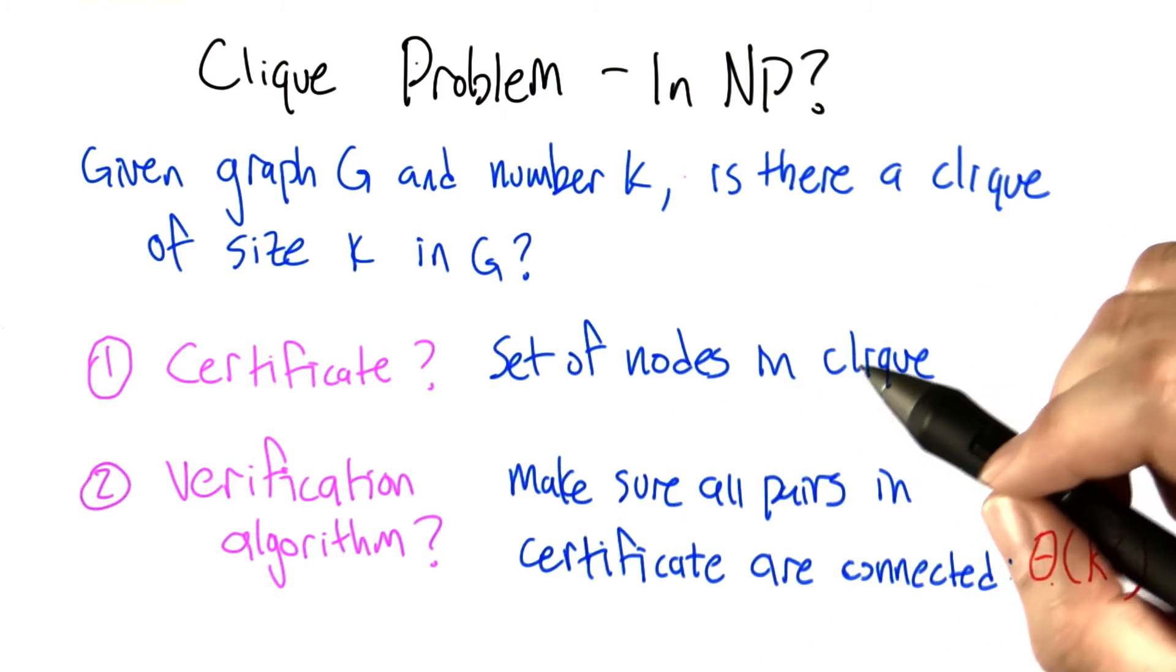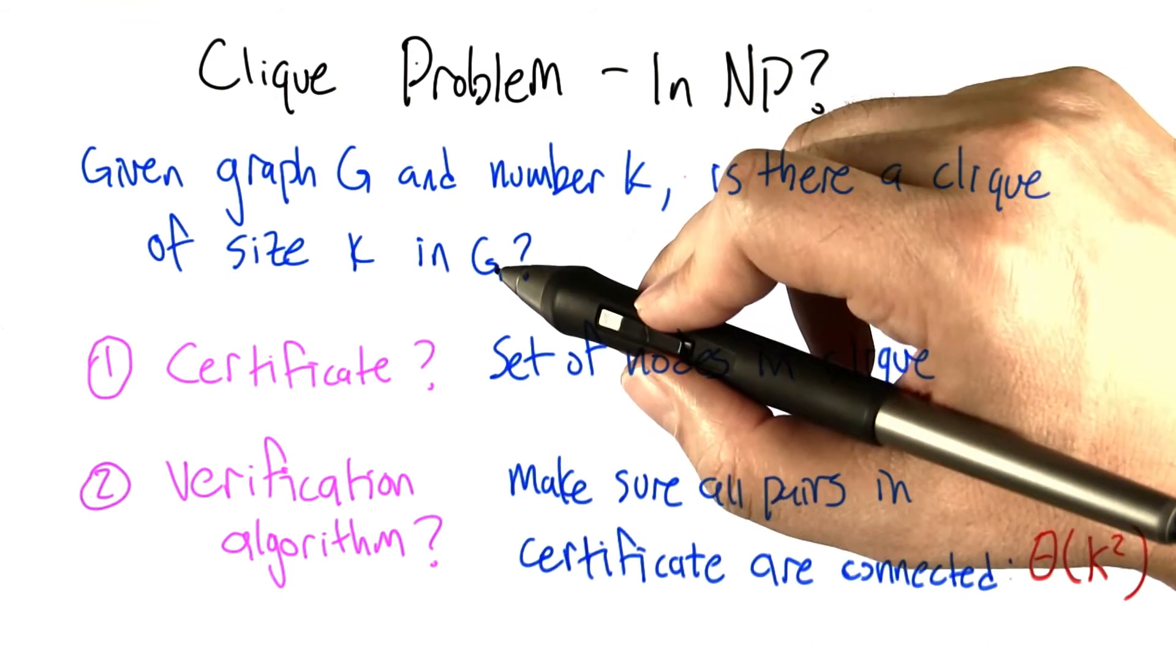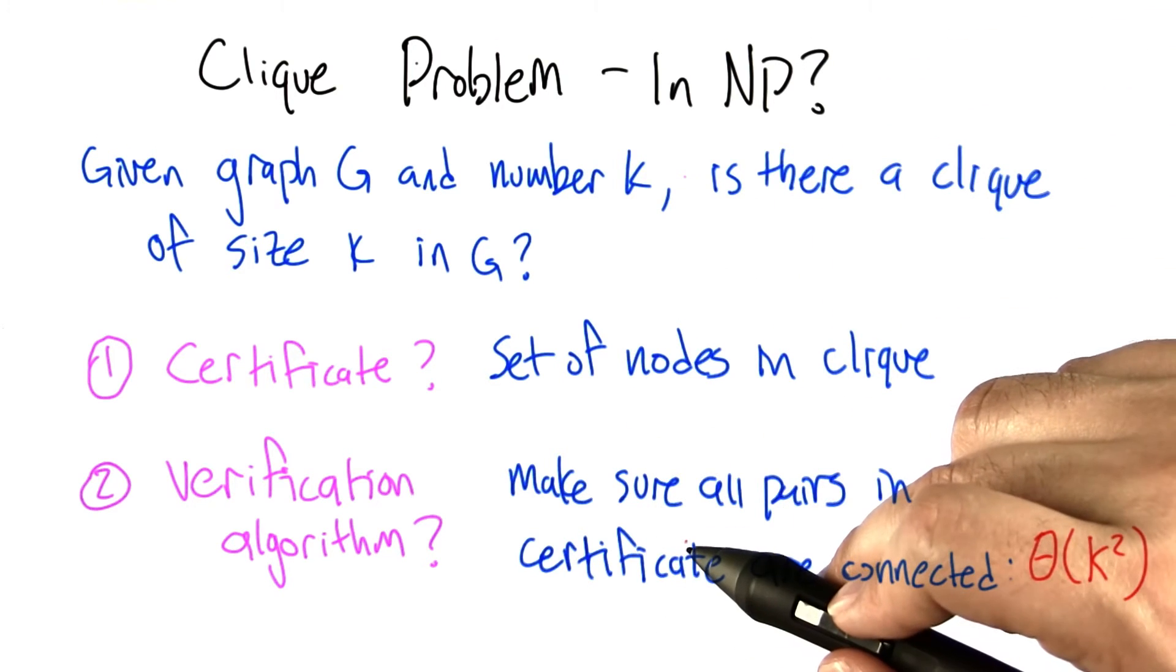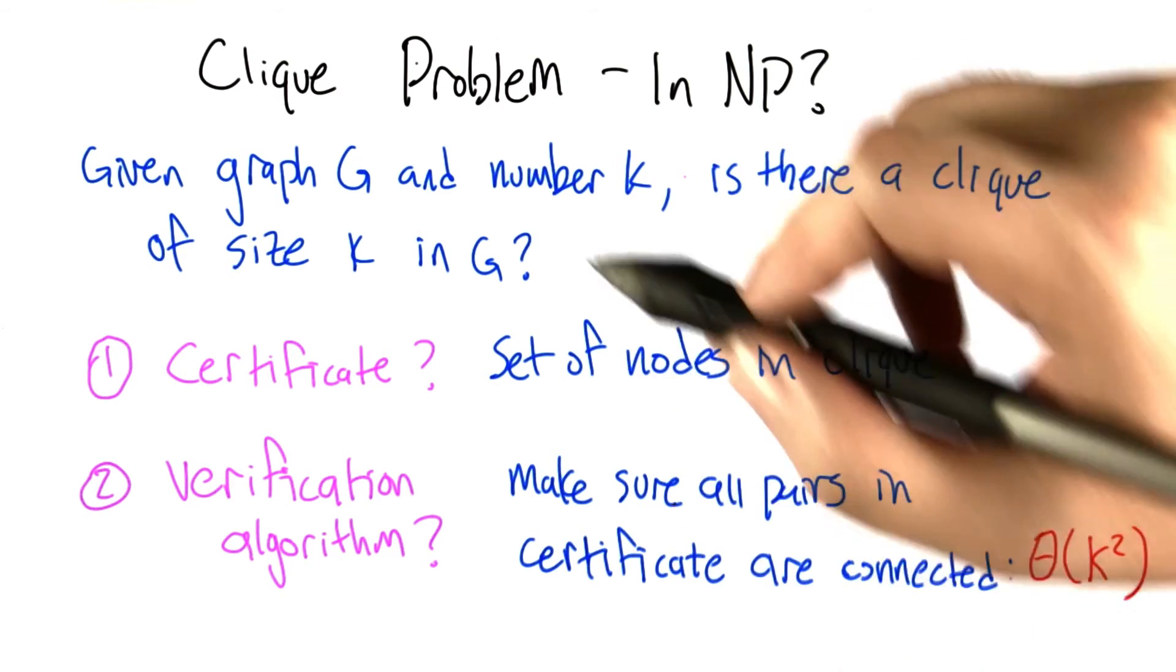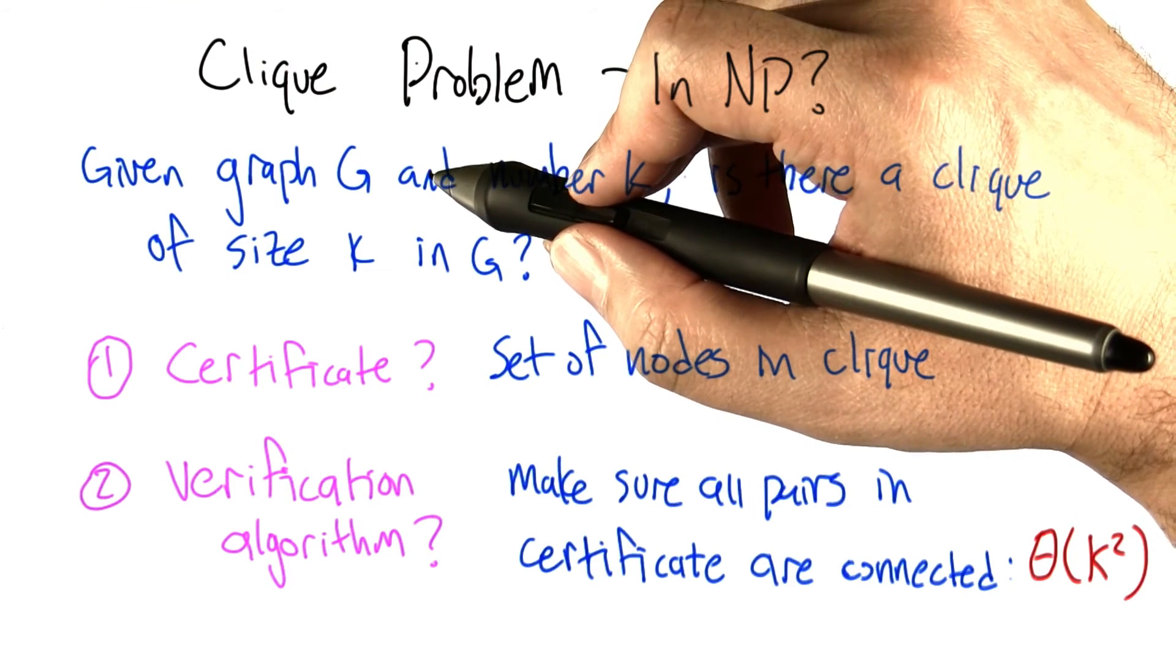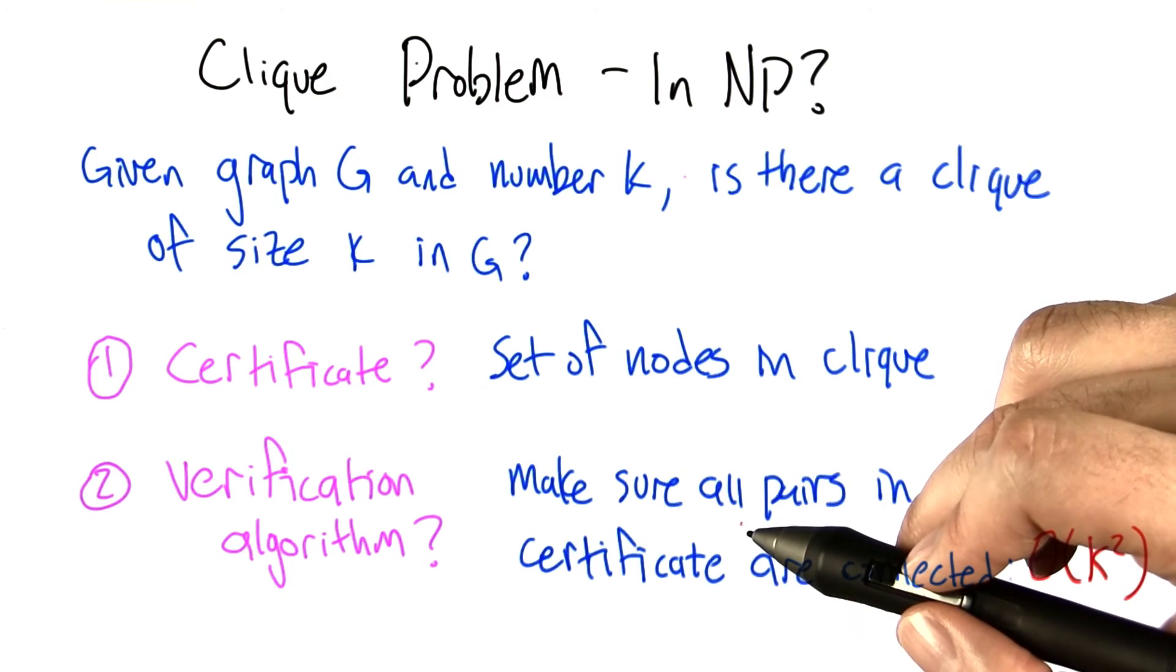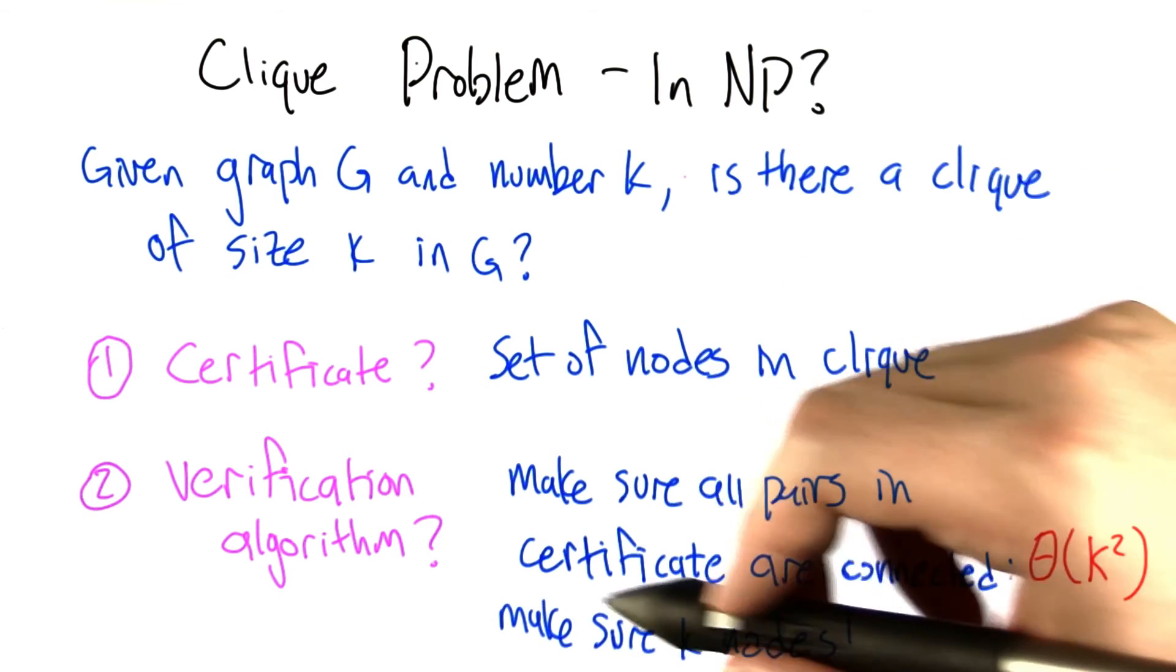Just to drive this point home now, for every graph G that has a k-clique, there is a certificate that would cause the verification algorithm to say yes. But for any graph G that doesn't have a k-clique, there's no certificate you can give it that would cause this verification algorithm to say yes.